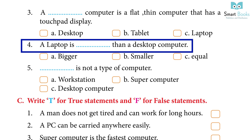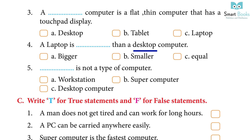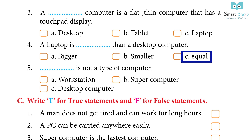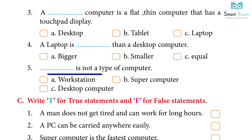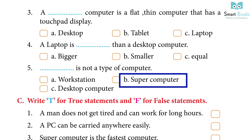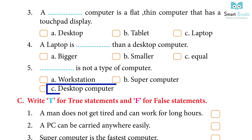Question 4: a laptop is dash than a desktop computer — a) bigger, b) smaller, c) equal. Answer: b) smaller. Question 5: dash is not a type of computer — a) workstation, b) supercomputer, c) desktop computer. Answer: a) workstation.